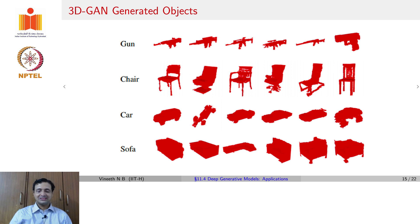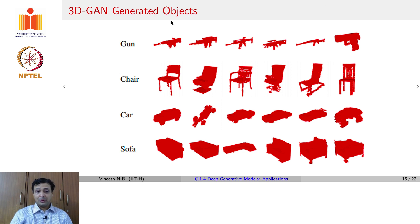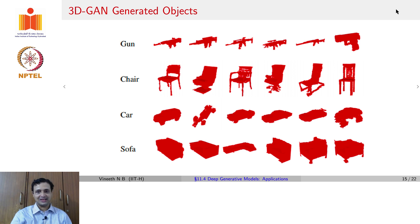When a GAN is trained to generate 3D objects, you get fairly good generations of different kinds of 3D objects, as you can see on this slide.